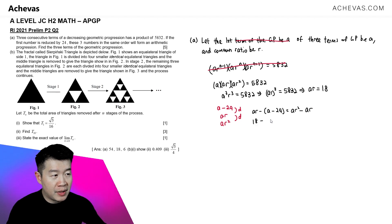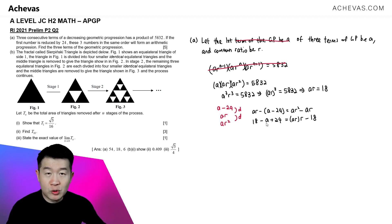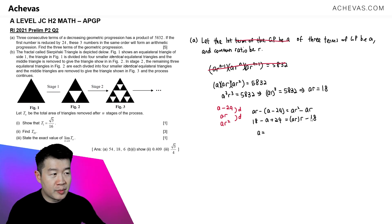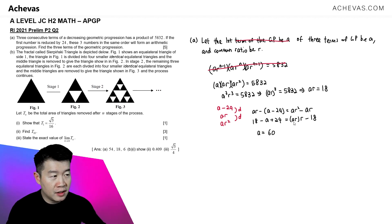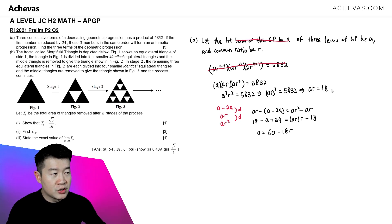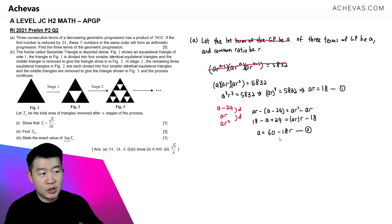Substituting AR equals 18 and rewriting AR squared as AR multiplied by R, we get: 18 minus A plus 24 equals 18R. Shifting A to the right-hand side and constants to the left gives us A equals 60 minus 18R. I'll call the equation AR equals 18 equation one, and A equals 60 minus 18R equation two. We now have two equations involving A and R that we can solve as simultaneous equations.